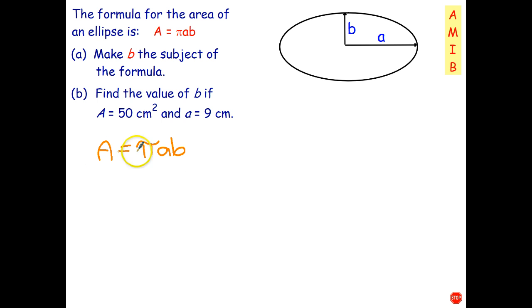Now to make b the subject I have to divide by pi because pi is multiplied by b and I also have to divide by a. Now we could do those in two separate steps but that's going to be a bit of a problem because we're going to end up with a fraction over a fraction. So it's not wrong to do it that way but it's certainly not the easiest way to do it.